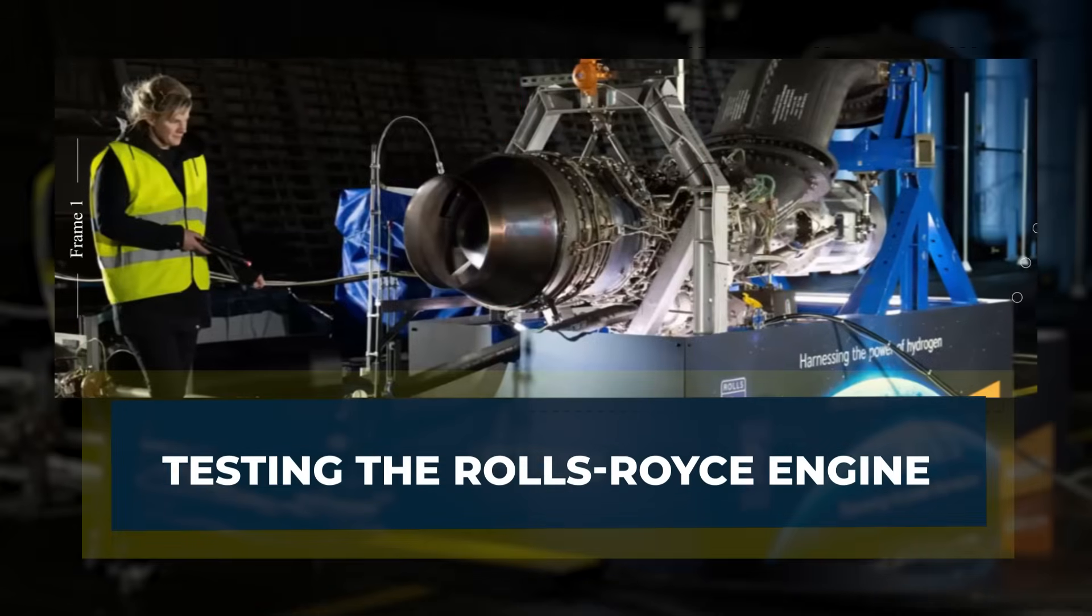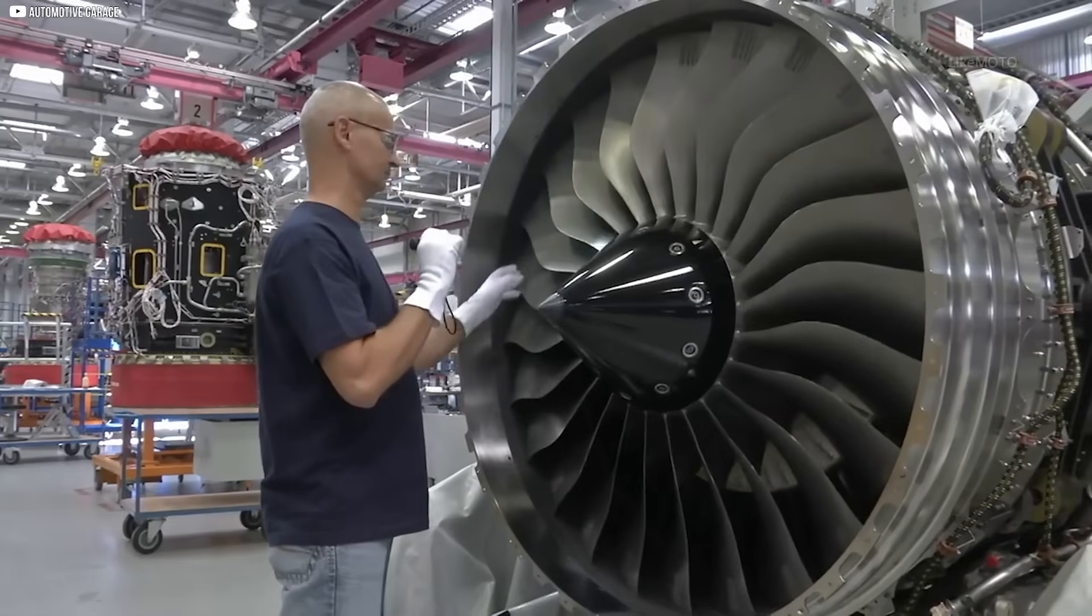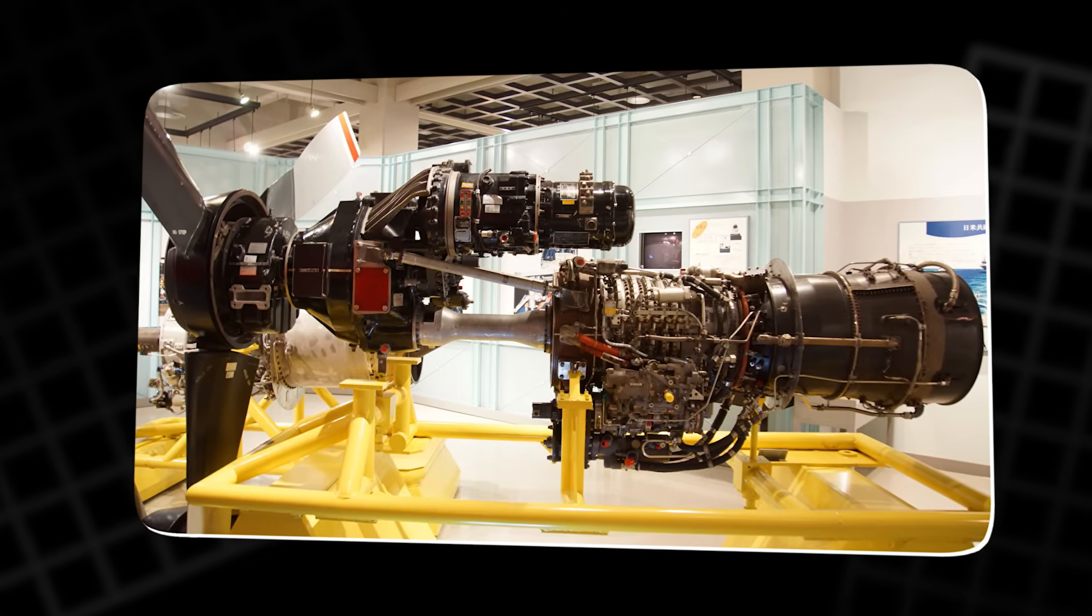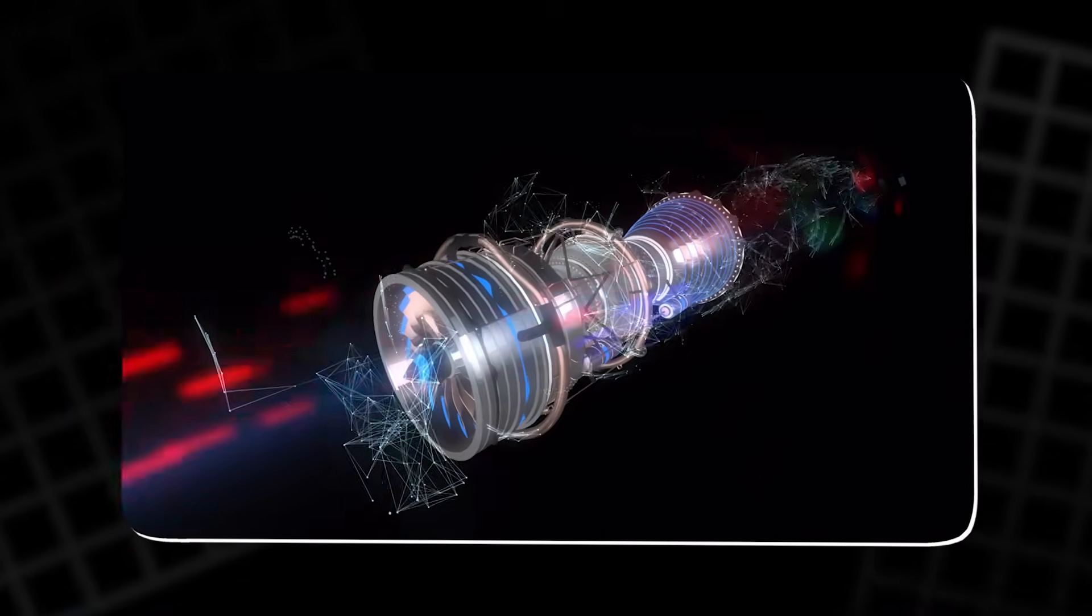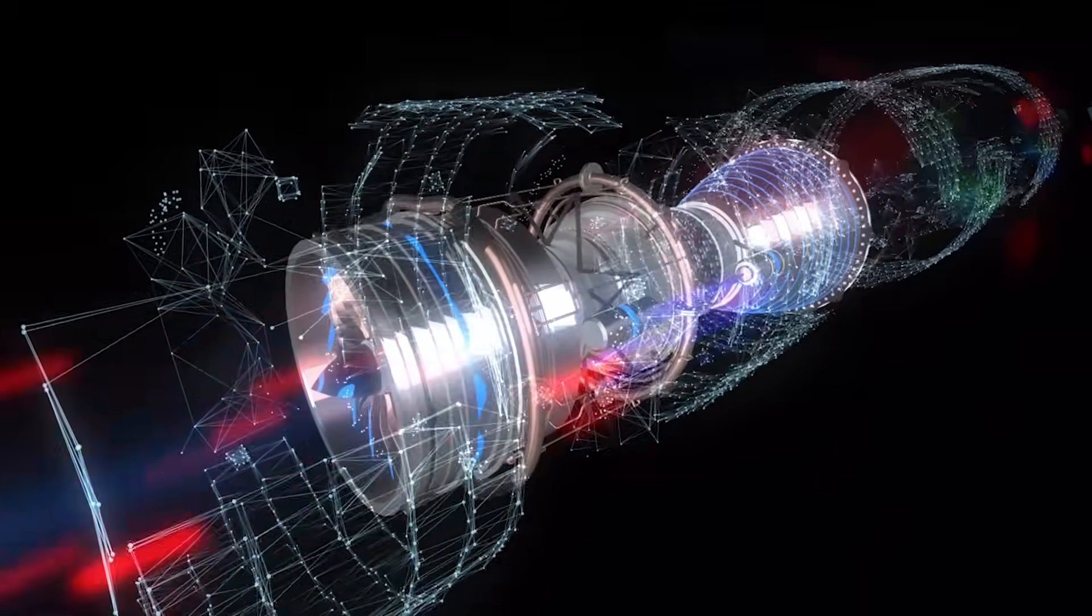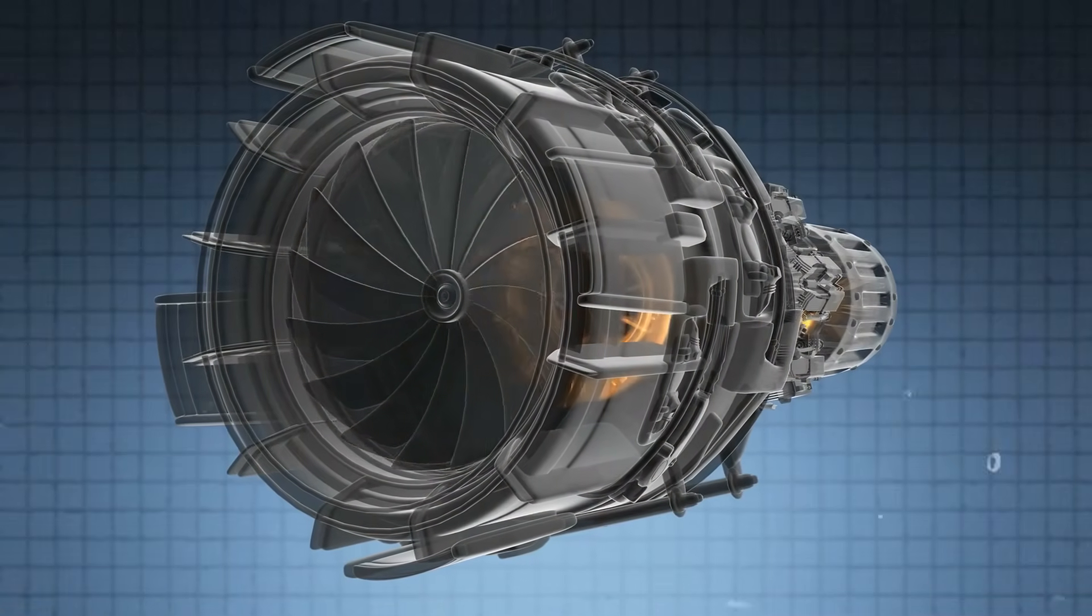Testing the Rolls-Royce engine. The Rolls-Royce hydrogen engine has moved beyond theory into real-world testing. At a test facility in England, engineers operate a modified version of an existing turboprop engine, carefully converted to burn hydrogen. The engine roars to life and water vapor, the harmless exhaust byproduct, condenses into visible plumes near the test stand.